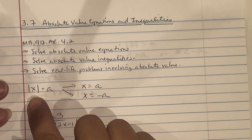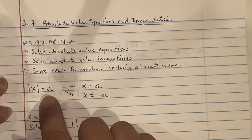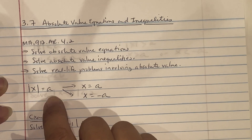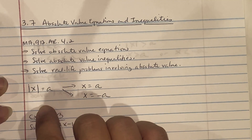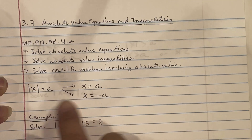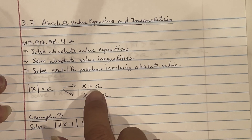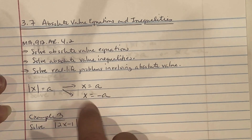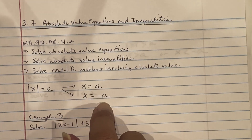The absolute value of x equals a. When you see something like this, it means you have x equal to a and x equal to negative a — two separate cases.